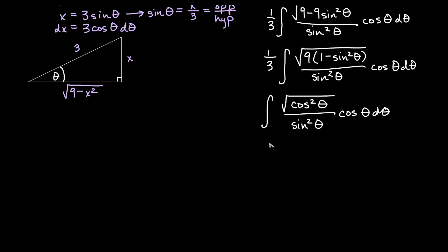If we reduce this, we're in a right triangle, so that is positive. We don't have to worry about absolute value there. We get a cosine there, we get sine squared theta, and we have another cosine theta d theta. So if you think here about combining these cosine terms, I'm going to actually jump over here and say we have cosine squared theta over sine squared theta d theta.